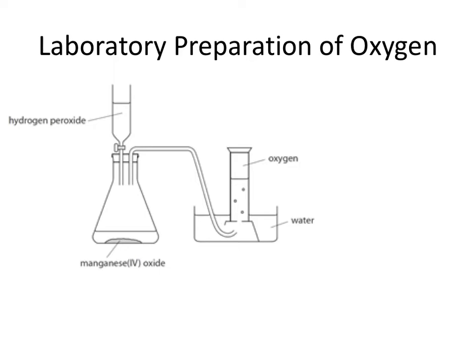This is the kind of setup we're going to use. Here we've got a conical flask and a delivery tube which is going to deliver our oxygen gas into an upturned measuring cylinder or boiling tube. That boiling tube was previously completely filled with water, and as the oxygen bubbles in, the water is pushed out.